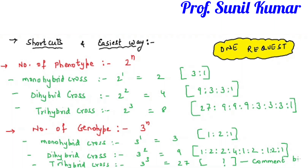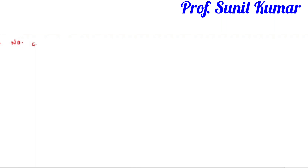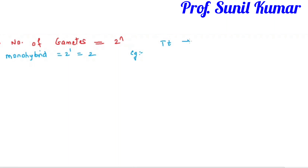Next is the number of gametes formed. The formula is 2 raised to n, but here n is the number of hybrids — not the number of alphabets. For a monohybrid like Tt, it is 2 to the power 1, giving 2 gametes. For TTAA Bb, there is only one hybrid (Bb), so you still get only 2 gametes.